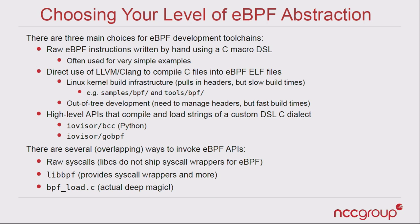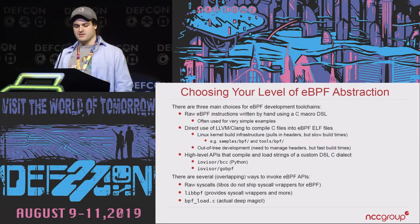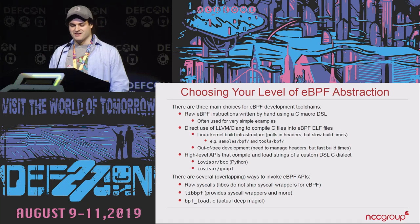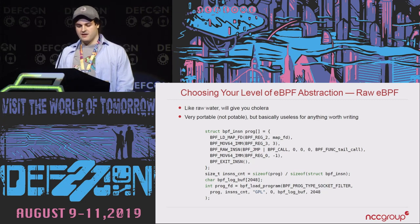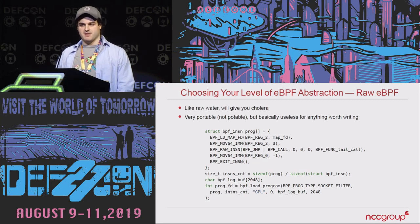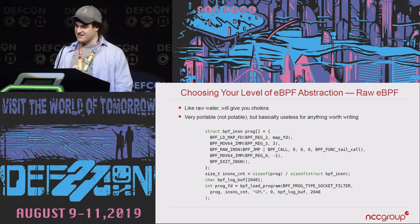You can use the LLVM toolchain to compile C code into eBPF architecture ELF binaries. There's build infrastructure in the Linux kernel but it's slow. There are also out-of-tree toolchains, but then you have to manage headers. High-level tools like BCC and go-BPF do a bunch of magic instrumentation and let you interact from Python or Go on the user-land side. Then there's the raw BPF syscalls — libcs don't ship wrapper stubs for these — and libbpf, which is maintained in the kernel and solves that problem.